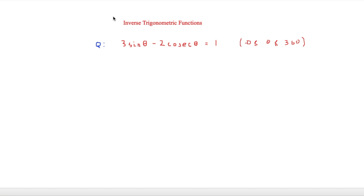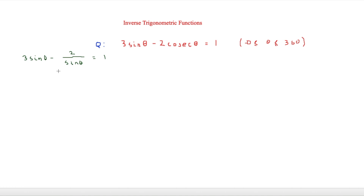The last question incorporates everything we've learned. It says 3 sine theta minus 2 cosec theta equals 1, for the range 0 to 360 degrees. First we get rid of cosec theta by rewriting it: 3 sine theta minus 2 over sine theta equals 1. We now have everything in sine theta, which is what we want. The next step is to multiply everything by sine theta to eliminate the fraction.